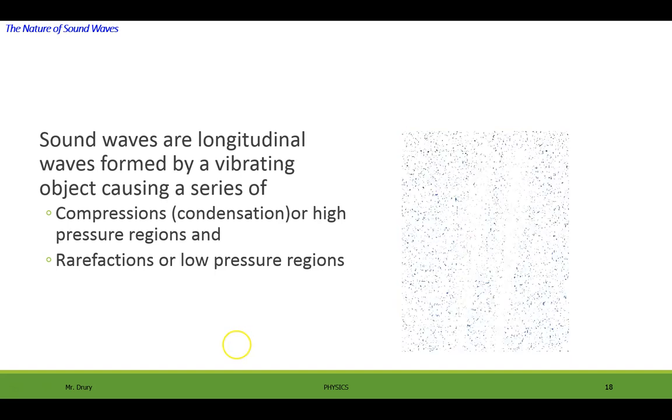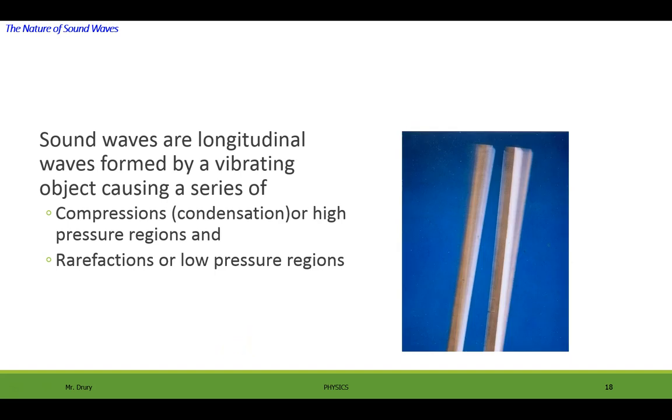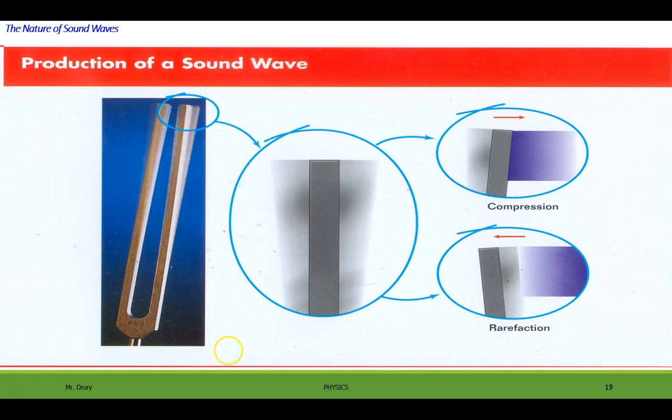So if you have a vibrating object like a tuning fork, it's moving back and forth, compressing areas and making low-pressured areas as it moves back and forth. Let me show you that a little bit better on a blow-up of this. As the tuning fork moves back and forth it compresses the air and pulls apart making a vacuum, and those series of compressions and vacuums travel through the medium and is known as sound.